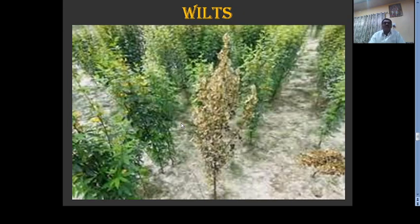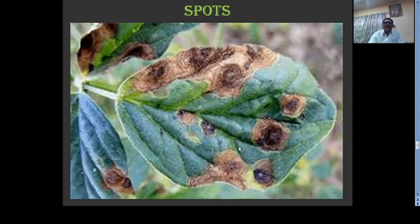This is wilt of tur, that is Cajanus cajan. Due to the fungus Fusarium oxysporum, which is present in the lumen of the xylem, the branches or entire plant gets wilted. This is alternaria leaf spot on soybean, family Fabaceae. On this family, Alternaria produces leaf spot diseases — these are the leaf spots produced on the upper surface of the leaves.